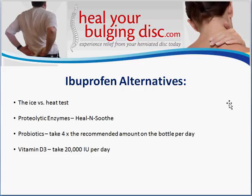Next, I would take probiotics — you can get these at pretty much any health food store. If you're in an inflamed situation or have a chronic pain condition, take four times the recommended amount on the bottle per day. Probiotics help break down those inflammatory chemicals as well. Also take vitamin D3 at 20,000 international units per day — that's really just four small pills. Vitamin D3 has been shown to help reduce the inflammatory process. If you combine the ice or heat with these three nutritional supplements, that usually has a really big effect on reducing inflammation quickly, with most patients experiencing relief within one or two days.